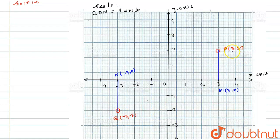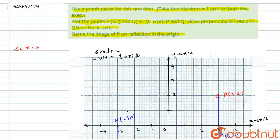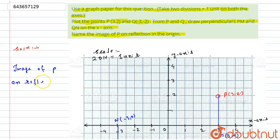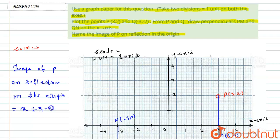Because the coordinates of P are (+3, +2), while the coordinates of Q are (-3, -2). So I can say that the image of P on reflection in the origin is nothing but point Q with the coordinates (-3, -2). So here is the required solution for this particular question.